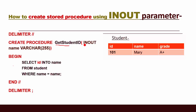Inside the bracket, the mode of the parameter is INOUT, the parameter name is 'name', and the data type is VARCHAR(255). This name variable is going to be used for both input and output. We will input the student name and it will output the result into the same name variable.